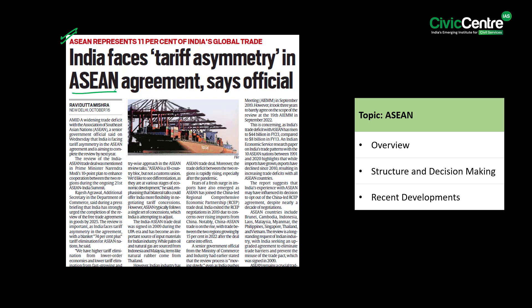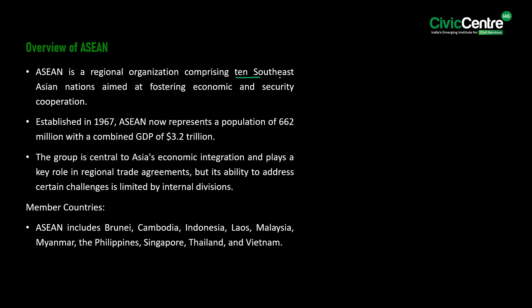The next article says that amid a widening trade deficit with the Association of Southeast Asian Nations, a senior government official said that India is facing tariff asymmetry in the ASEAN agreement and is aiming to complete the review by next year. ASEAN is a regional organization comprising 10 Southeast Asian nations aimed at fostering economic and security cooperation, established in 1967. ASEAN now represents a population of 662 million with a combined GDP of $3.2 trillion, central to Asia's economic integration, though its ability to address certain challenges is limited by internal divisions.